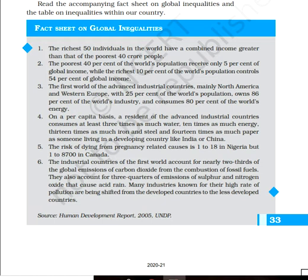The first world of advanced countries — mainly the countries of North America and Western Europe — have 25 percent of world population but own 86 percent of world's industry and consume 80 percent of world's energy. Their per capita income is 13 times as much iron and steel and 14 times as much paper as compared to a person living in a developing country like India or China.